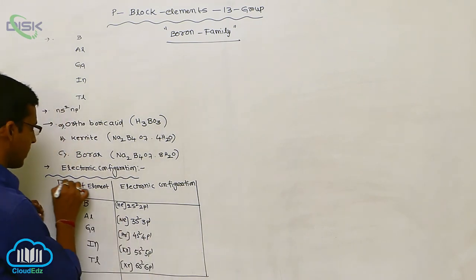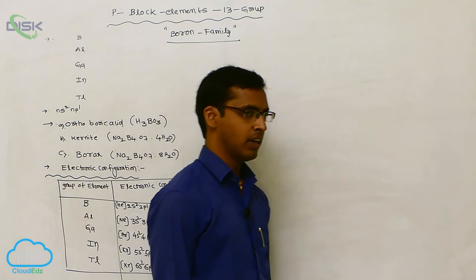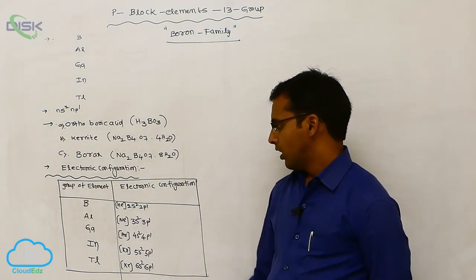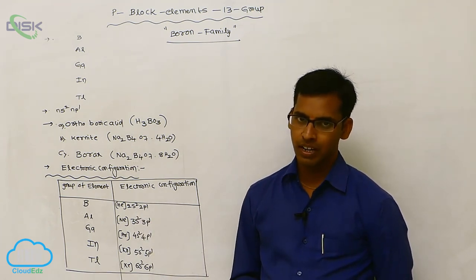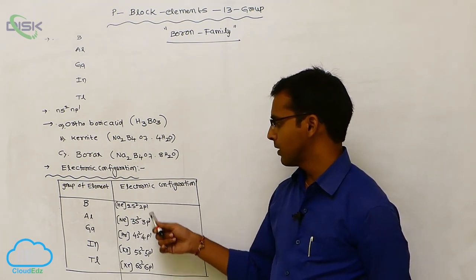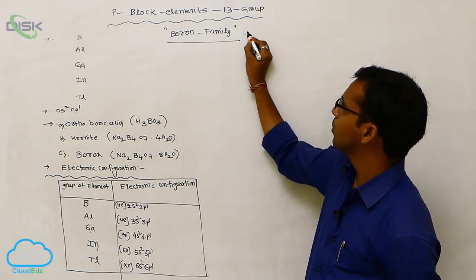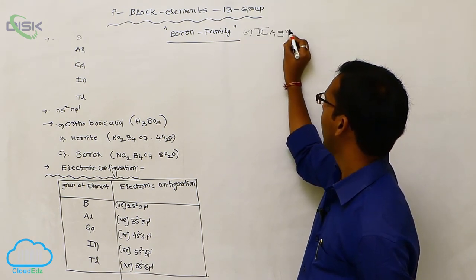This is our nearest inert gas configuration. So boron, aluminium, gallium, indium, and thallium. The outermost contains maximum only 3 electrons. The S orbital is containing 2 electrons and P orbital containing 1 electron. 2 plus 1, that is your 3. That is why it is called 13A group elements. Another name is 13A group elements.